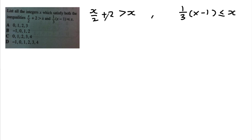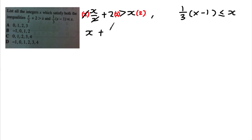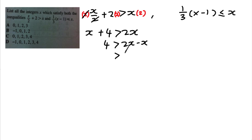Multiplying through by 2: 2 and 2 cancel to give x, then 2 × 2 = 4, and bigger than 2x. Moving x to the other side gives 2x − x, so x < 4.